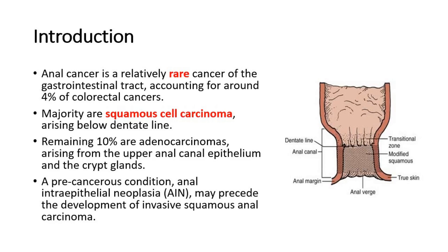The majority of anal cancers are squamous cell carcinomas, arising from below the dentate line. The remaining 10% are adenocarcinomas, which arise from the upper anal canal epithelium and the crypt glands. A precancerous condition, anal intraepithelial neoplasia, may precede the development of invasive squamous anal carcinoma.